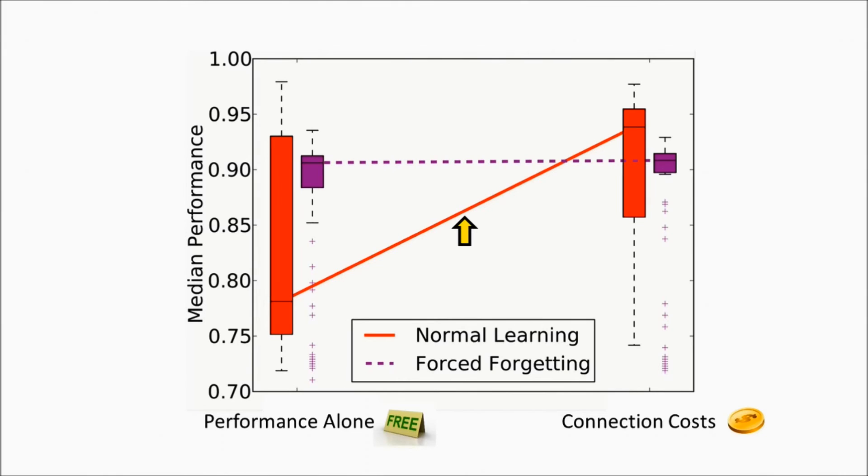However, in this new situation, where we force forgetting between the learning of different skills, the connection cost no longer yields an increase in performance. This indicates that the increased performance of the modular sparsely connected networks is specifically related to their ability to avoid forgetting old skills as new skills are learned.